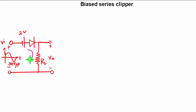In the series clipper, the diode and load resistance are in series. It's biased because the voltage source is connected in series with the diode. Now how to go about the analysis?